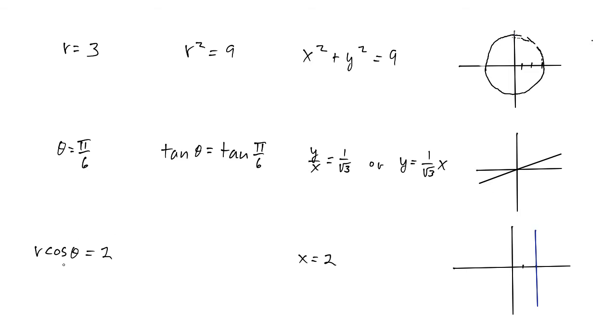Or we could have something like r cosine theta equals a constant. Well, r cosine theta is x, so we have x equals 2. That's a vertical line at x equals 2. If we would have had r sine theta equals 2, we would have had y equals 2, so it would have been a horizontal line at y equals 2.